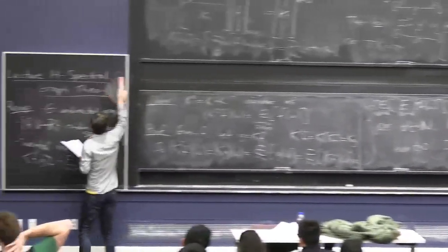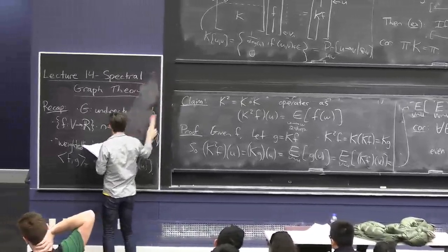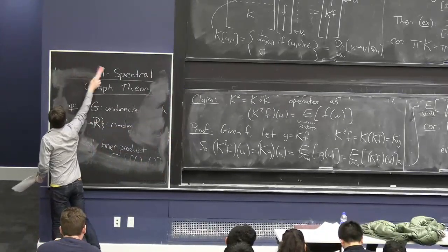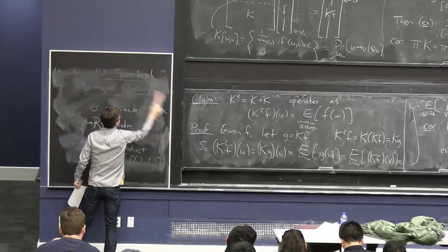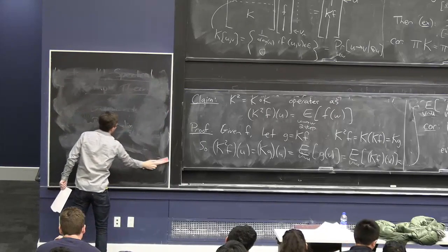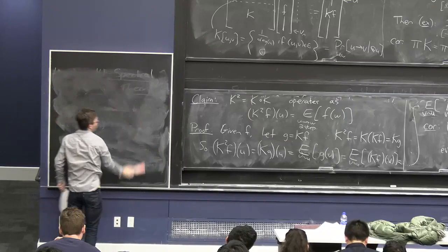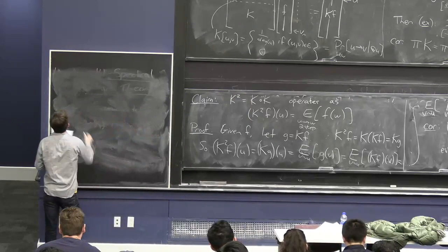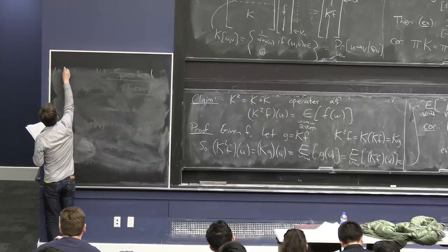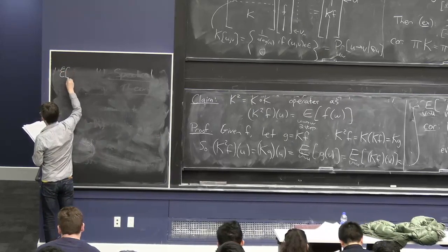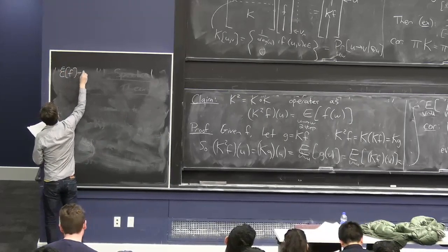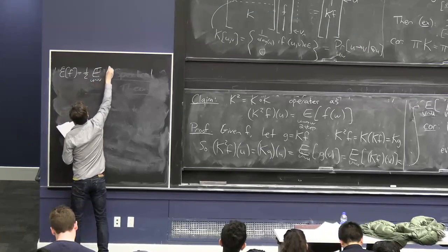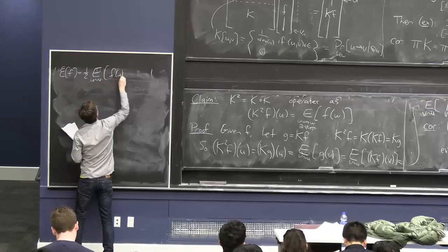Let's go back to the most important topic of study in spectral graph theory, which is this quadratic form. We'll get back to E of f, which is one half the average over edges of the squared difference of f values.